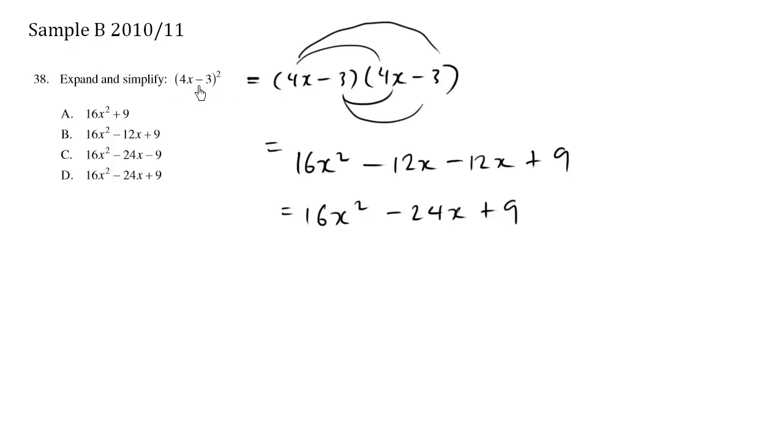which is negative 12x, and I'm going to double it. It's going to be negative 24x right off the bat, and then the last part squared.